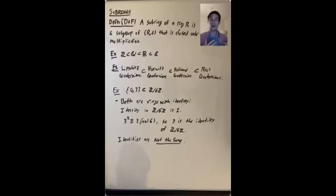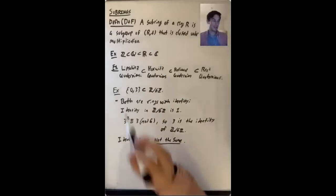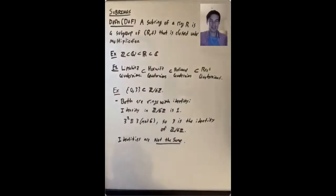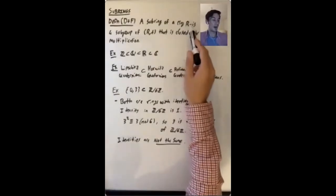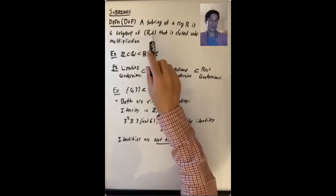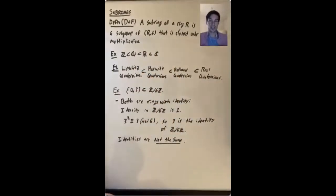I want to start this video with a quick discussion of a definition that can be a little tricky. I want to talk about subrings. Here is the definition given in Dummit and Foote: a subring of a ring R is a subgroup of R-plus that is closed under multiplication.